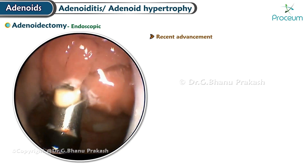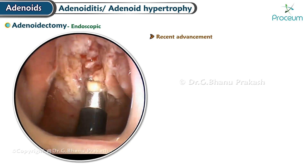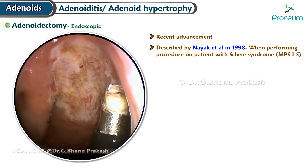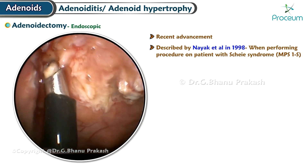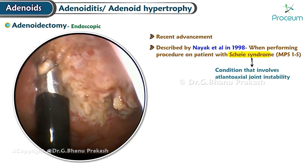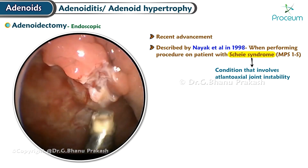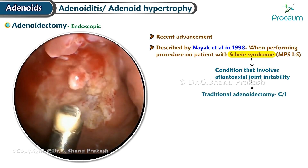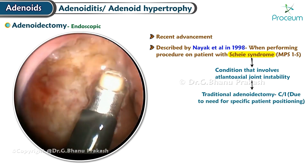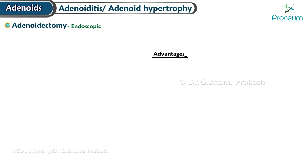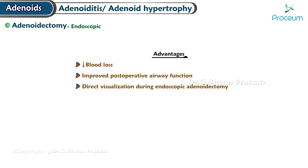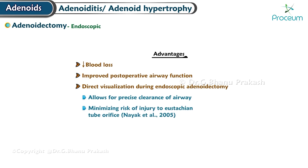Endoscopic adenoidectomy is a relatively recent advancement in surgical management of adenoid hypertrophy. It was initially described by Nyack et al. in 1998 when performing the procedure on a patient with Scheie syndrome (MPS IS), a condition involving atlanto-axial joint instability where traditional adenoidectomy is contraindicated. A comparative study revealed benefits of the endoscopic approach including reduced blood loss, improved post-operative airway function, precise clearance of the airway, and minimized risk of injury to the Eustachian tube orifice.